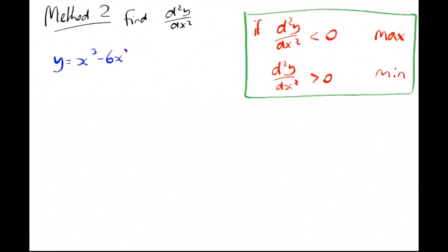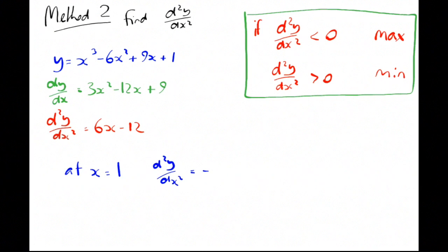So we'll have a look at the same example. Y equals x cubed minus 6x squared plus 9x plus 1. Differentiate it. We've got 3x squared minus 12x plus 9. The second derivative is going to give us 6x minus 12. Now at our two solutions, at x equals 1, d²y by dx² is minus 6. That's negative, so that's a maximum.